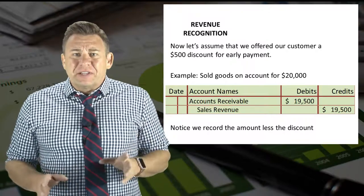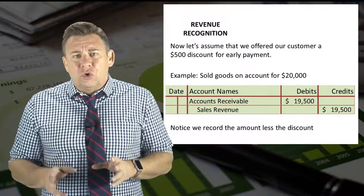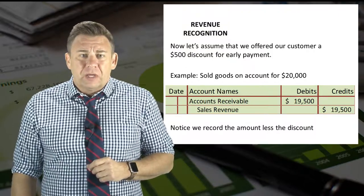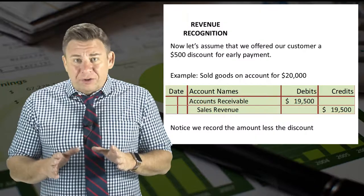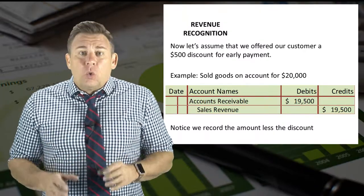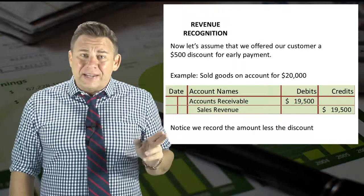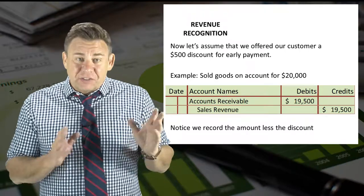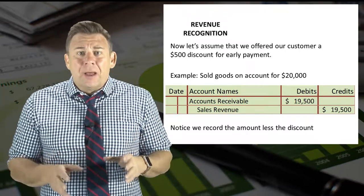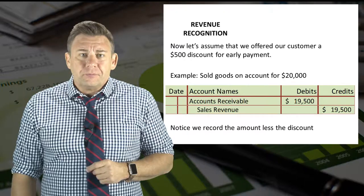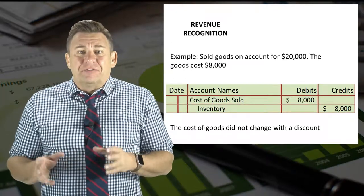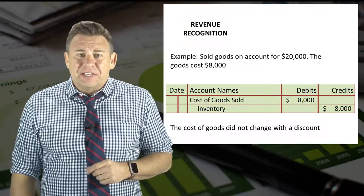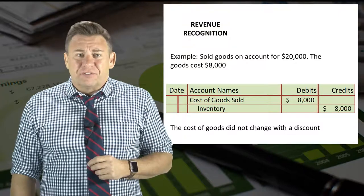Now let's look at the same examples, only we will assume that we offer our customer a $500 discount for early payment. Since we record revenue at the amount we expect to receive, we would debit accounts receivable and credit sales revenue for $19,500 — this is the $20,000 sale minus the $500 discount. Since the discount only impacts the amount of cash we expect to receive, our cost journal entry remains exactly the same. The discount does not impact the cost of our goods.